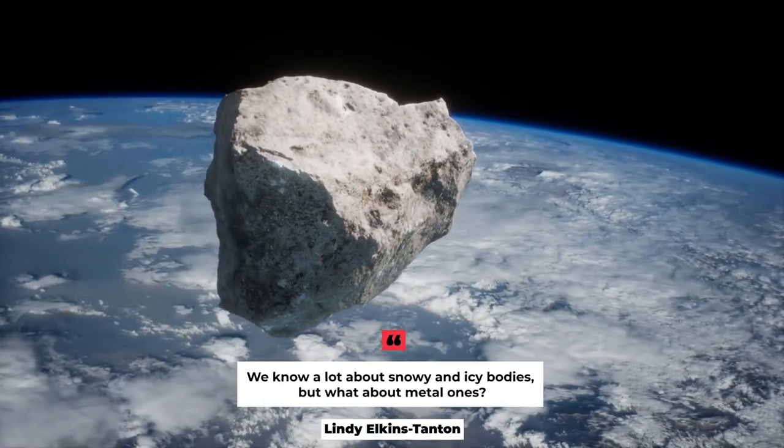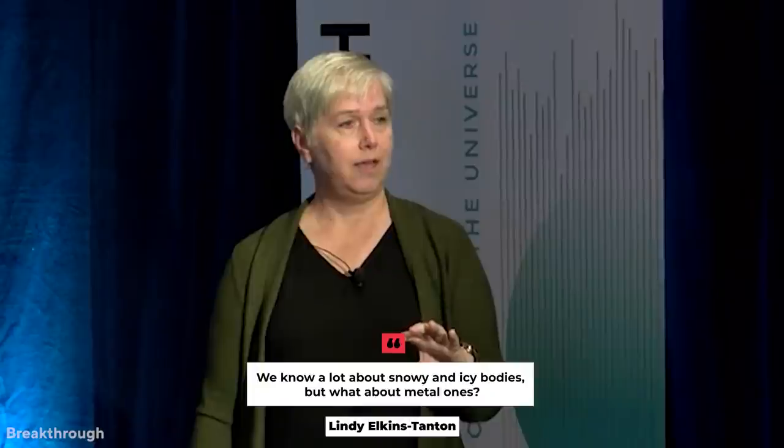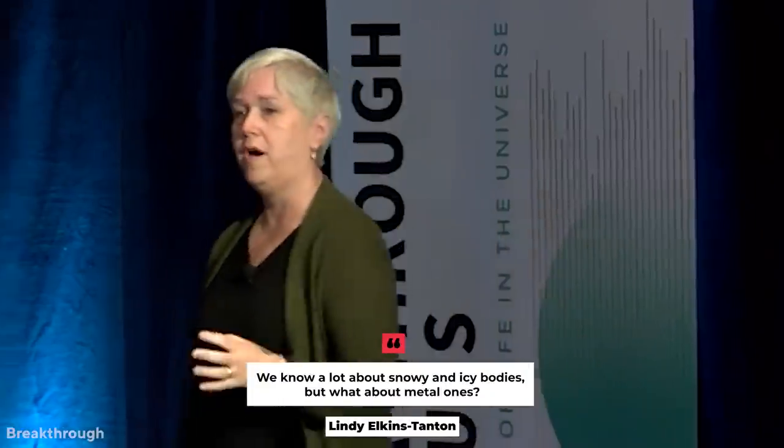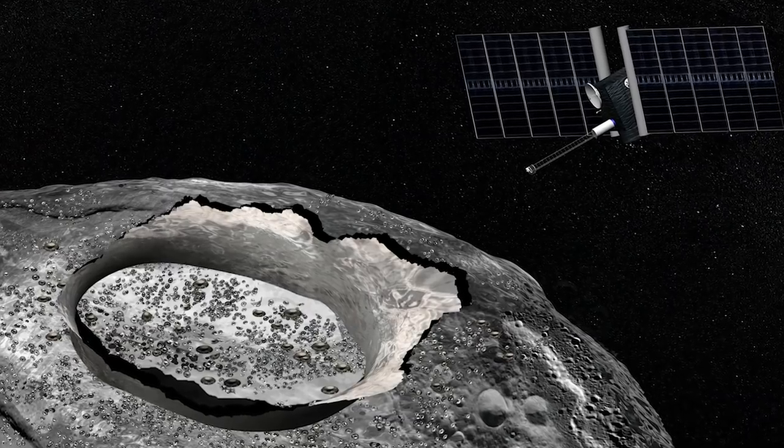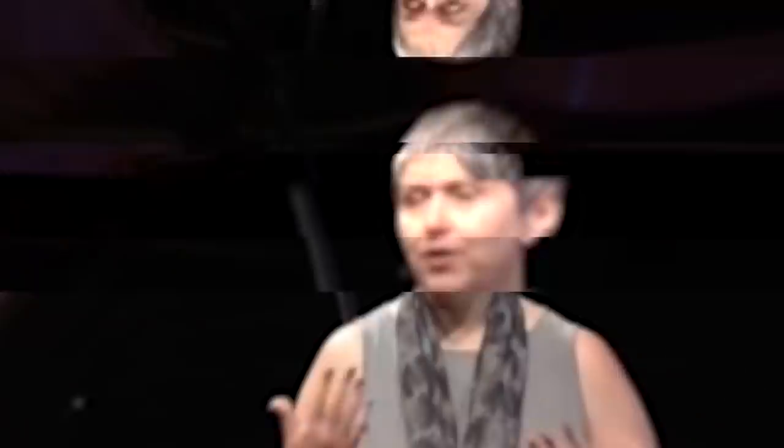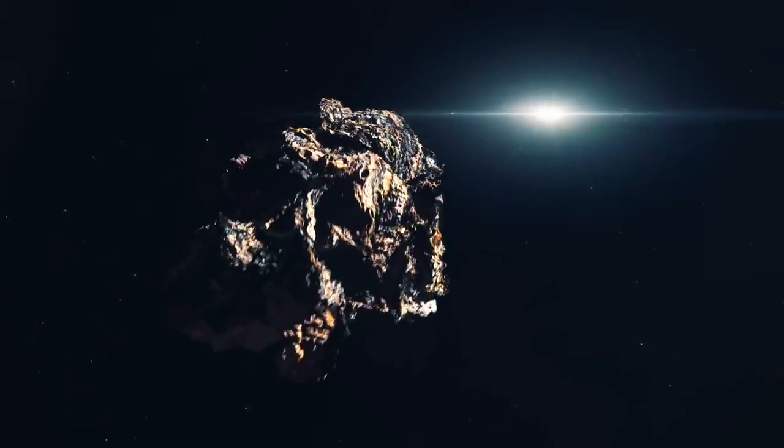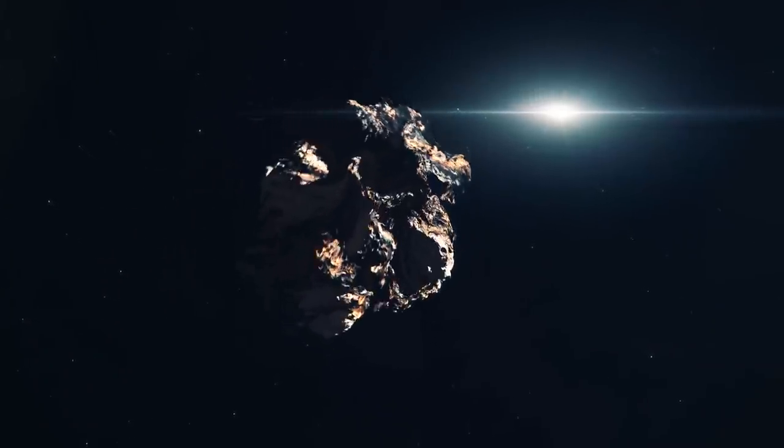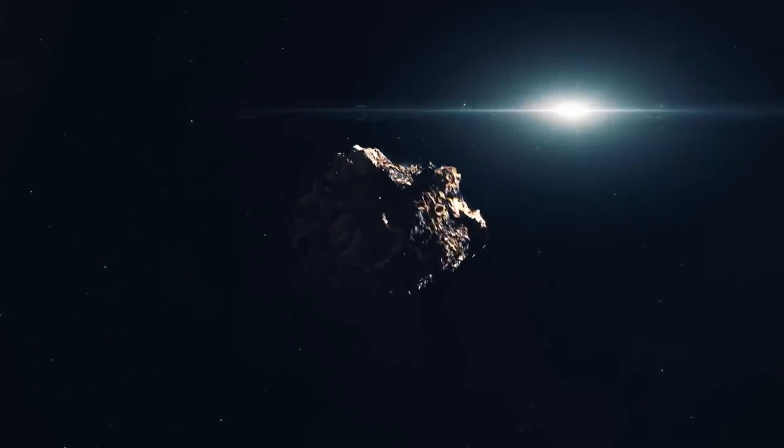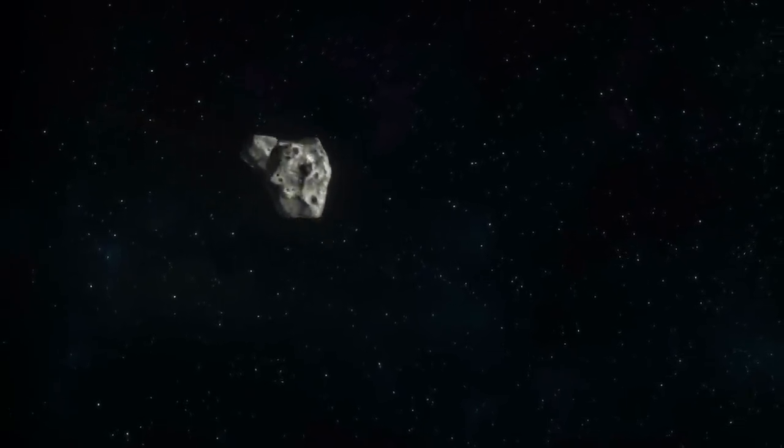We know a lot about snowy and icy bodies, but what about metal ones? Elkins-Tanton said. What does the surface of a metal world look like? For example, she added, it's possible that material melted and blasted out by large impacts on Psyche solidifies in a sheet before being lost to space, causing metallic curtains of ejecta to jut from the rims of impact craters.